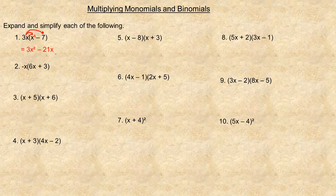These are not like terms, so I cannot combine them — I can't subtract or add them. That's because 3x squared has two x's multiplied, while minus 21x has only one, so they're not the same kind of term.